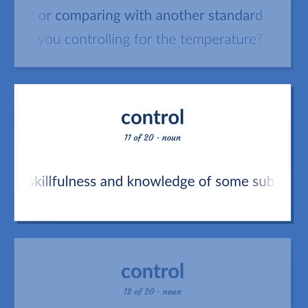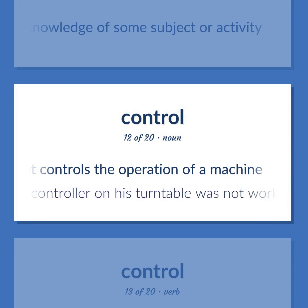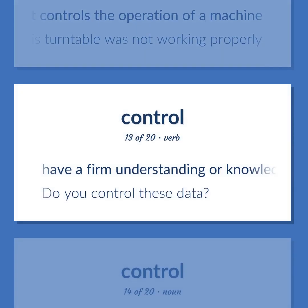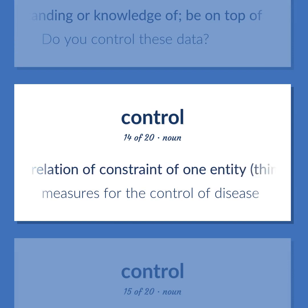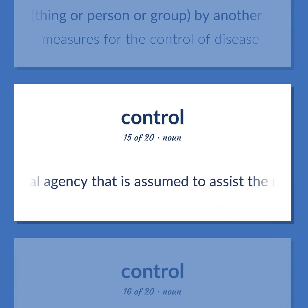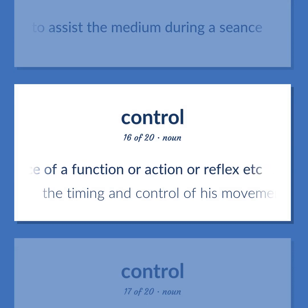Great skillfulness and knowledge of some subject or activity. A mechanism that controls the operation of a machine. The speed controller on his turntable was not working properly. Have a firm understanding or knowledge of; be on top of. Do you control these data? A relation of constraint of one entity, thing or person or group, by another. Measures for the control of disease. A spiritual agency that is assumed to assist the medium during a seance. Physiology: Regulation or maintenance of a function or action or reflex. The timing and control of his movements were unimpaired.